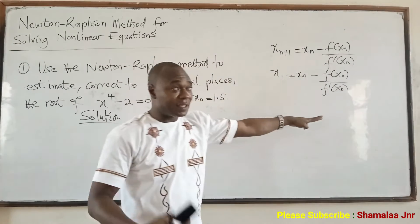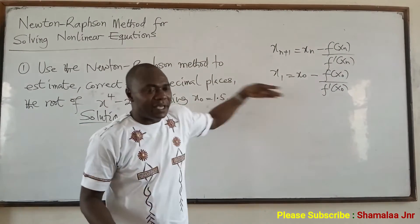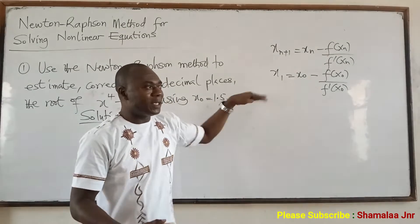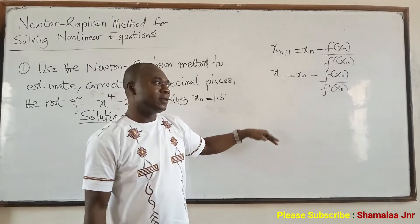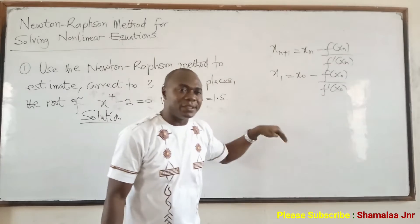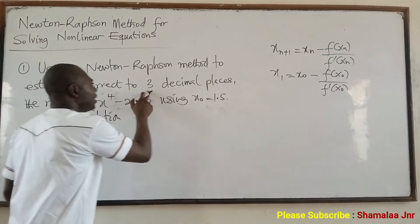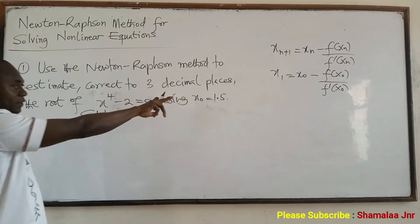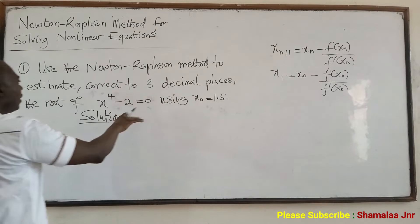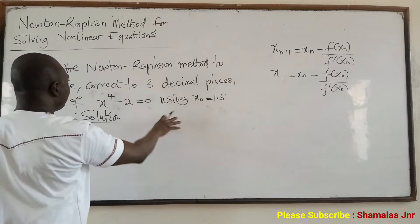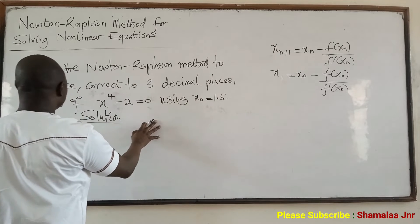It's an iterative process. So we are going to use X0 to get X1, use X1 to get X2, use X2 to get X3, until a stopping criterion is met. You see that I said correct the answer to three decimal places — that will help us to stop. So each of these words is very, very important.